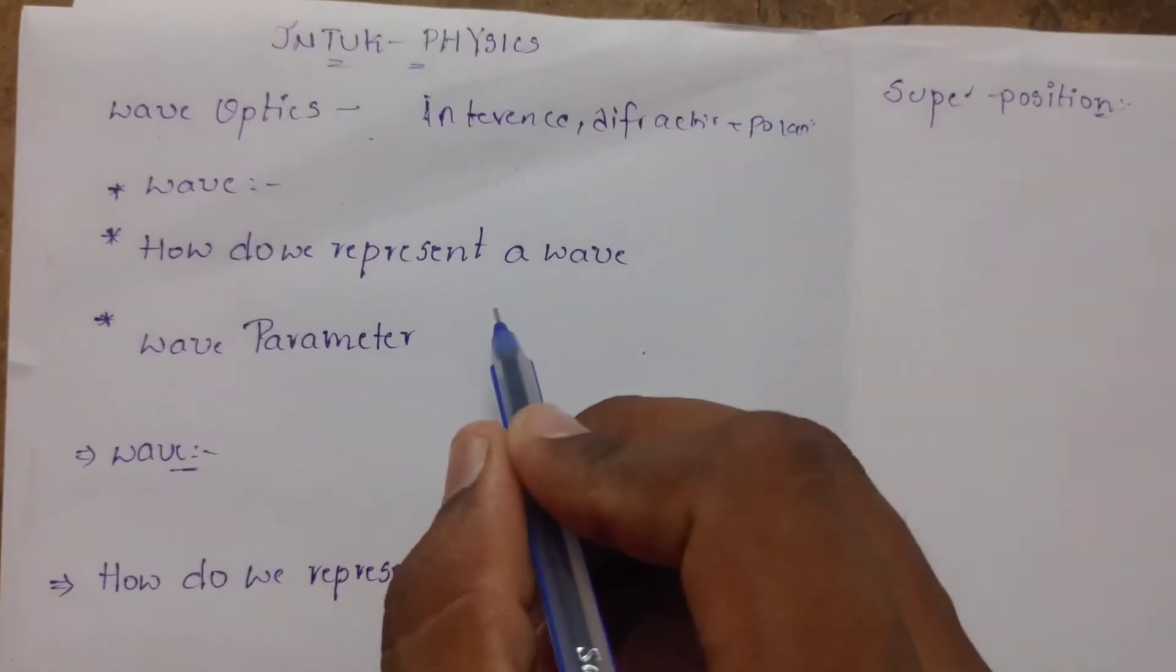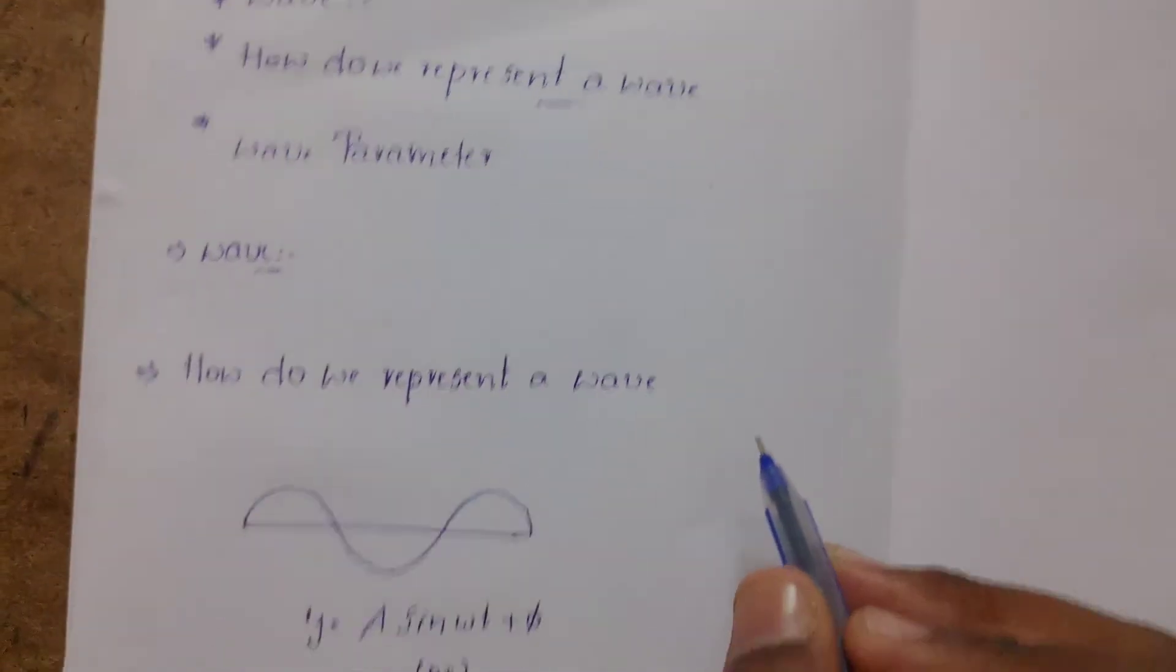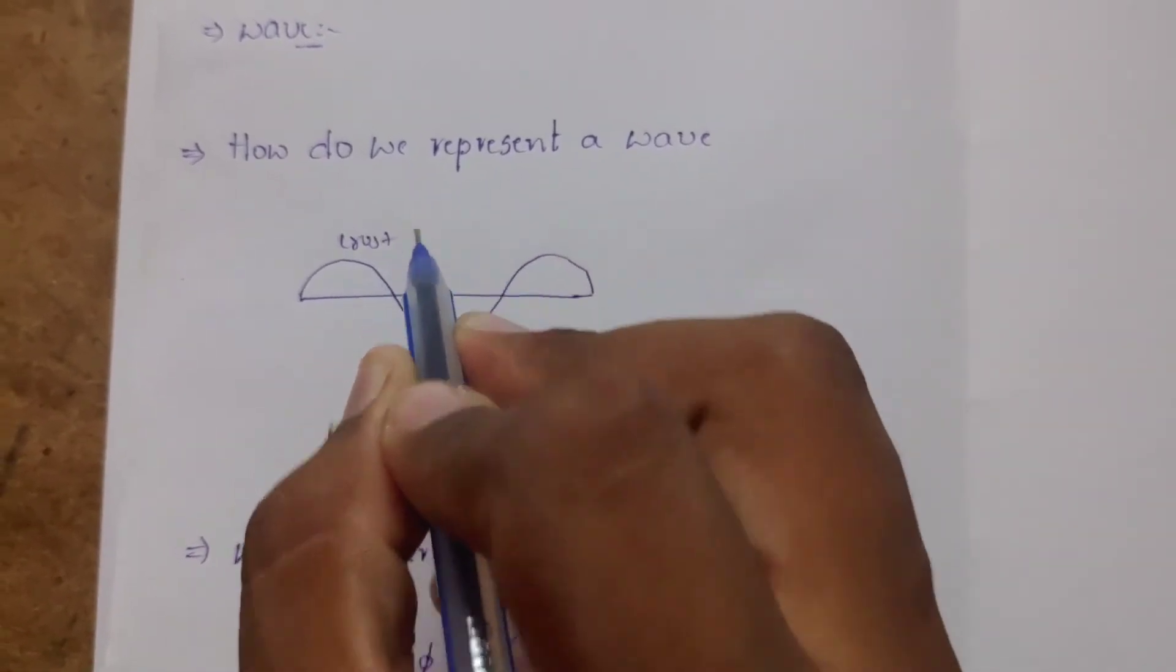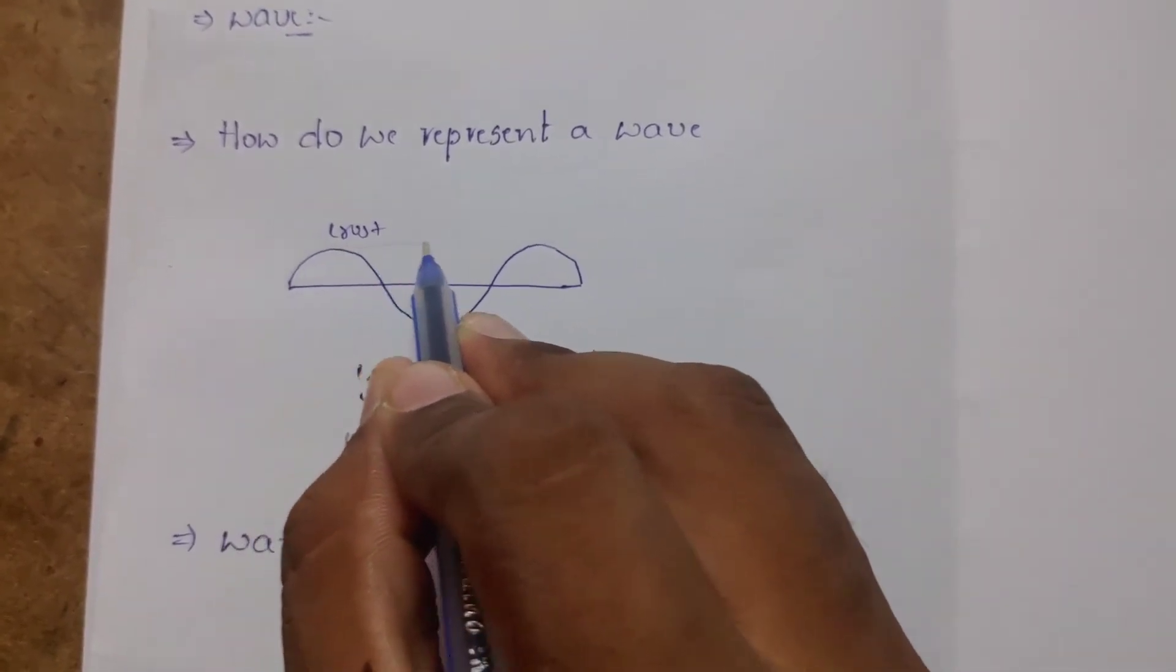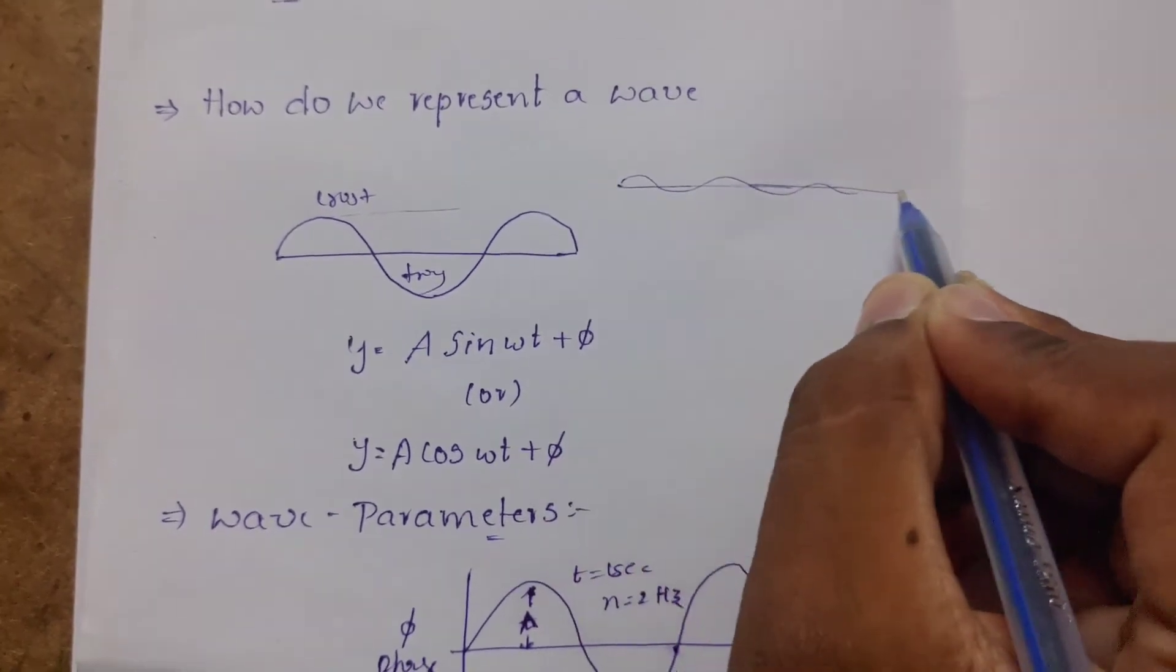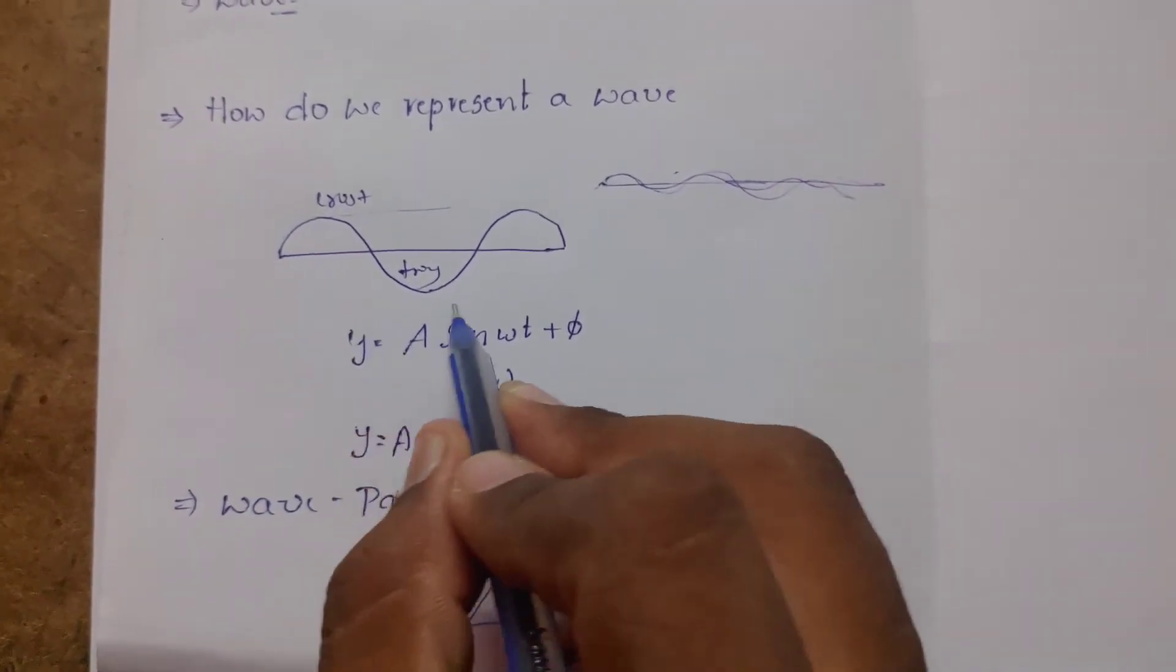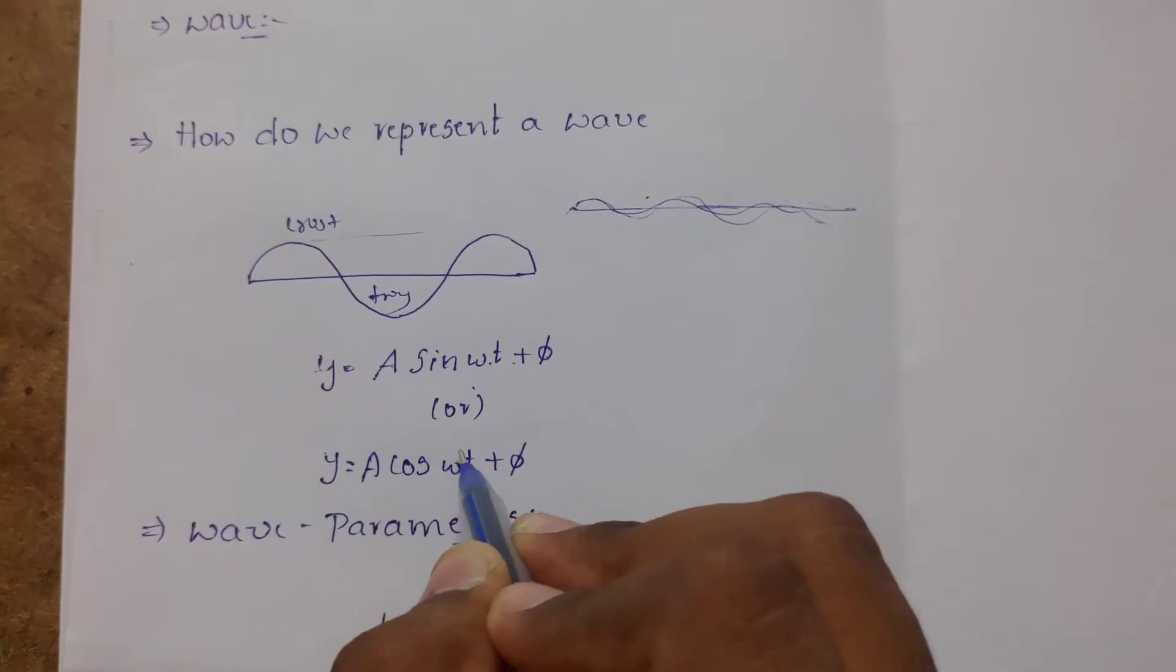How do we represent a wave? A wave has trough and crest. The wave exhibits building motion traveling, and has different types based on frequency and path. We represent it as y equals A sin omega t or A cos omega t plus phi.